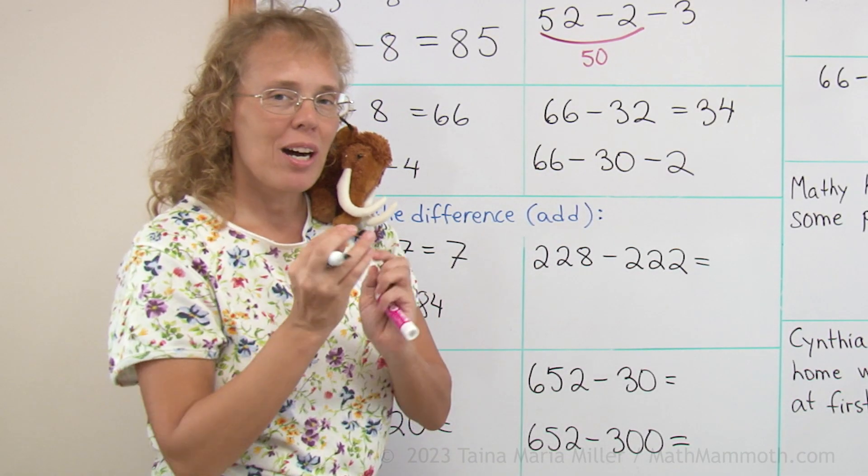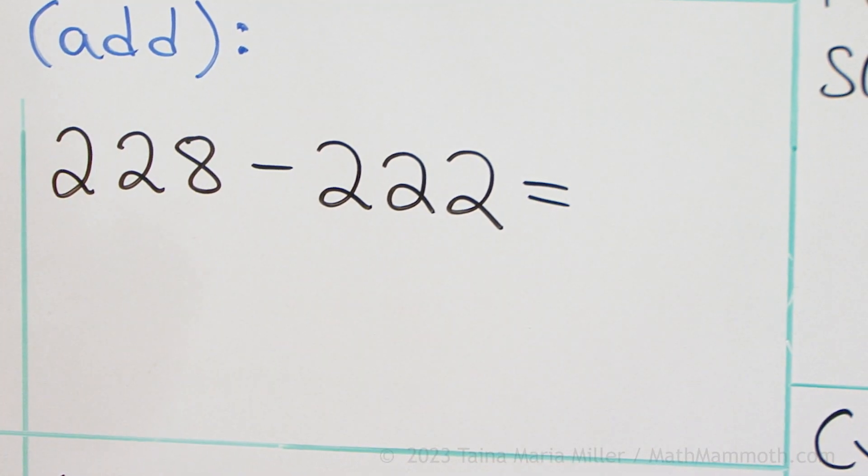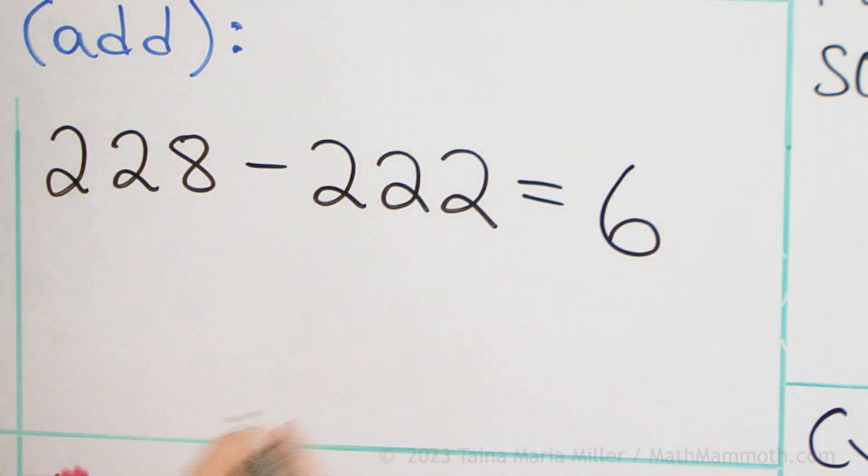Again here, how far apart are these two numbers? See they are pretty close, right? Just 6. Yep, the answer is plain 6.